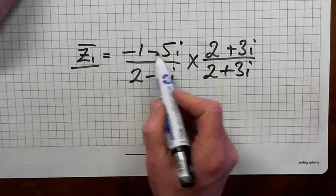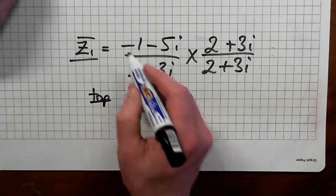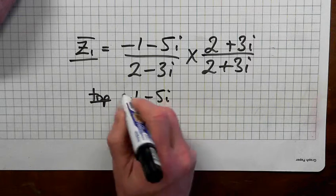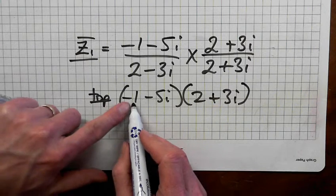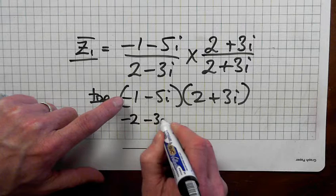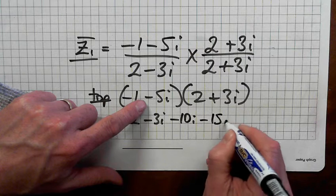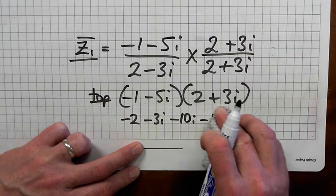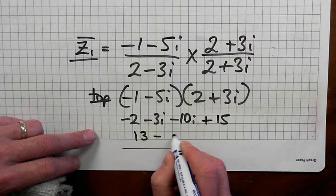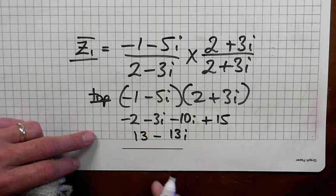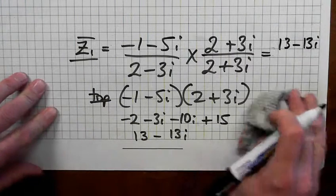Alright, so now we'll do the top bit first, so top. Minus 1 minus 5i times 2 plus 3i. So multiply by minus 1 first: minus 2 minus 3i. Minus 5i: minus 10i minus 15i squared. I squared is minus 1 times 15: plus 15. 15 minus 2: 13 minus 13i.